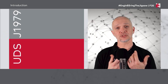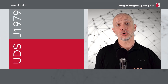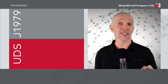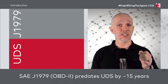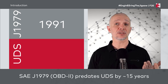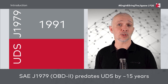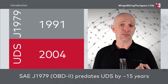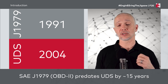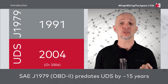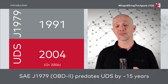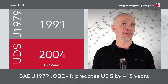As a quick recap, we talked in previous episodes about how the J1979 protocol used for OBD2 predates UDS by roughly 15 years. J1979 was first published in 1991, while UDS was first published in the guise of diagnostics on CAN in 2004, with the formal UDS specification published in 2006 — so really about 15 years after 1991, and in fact nearly 20 years ago now.